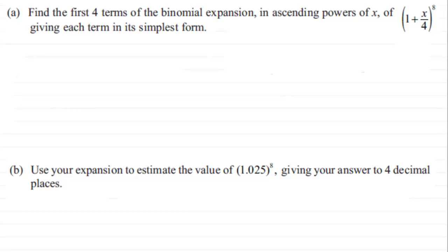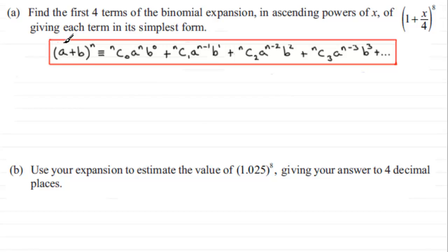So how do we do something like this? You should be familiar with the binomial expansion. It's essentially this formula: (a + b) to the power n, which we use when n is a positive integer.